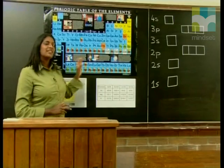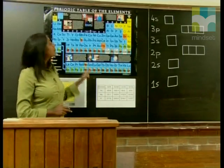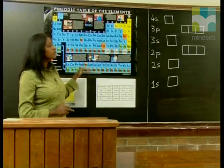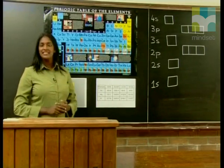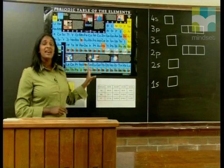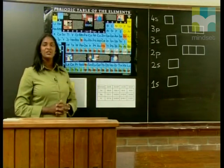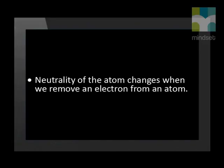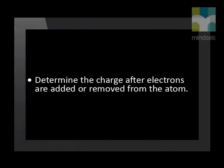If you look closely at the periodic table, you will see that there are many interesting repeating patterns. In this lesson, we are going to show how some of these patterns are linked to the atomic model. We will also look at how the neutrality of the atom changes when we remove an electron from an atom, and how to determine the charge after electrons are added or removed from the atom.